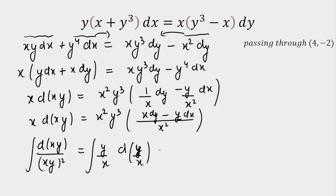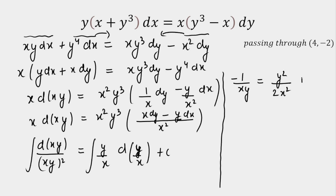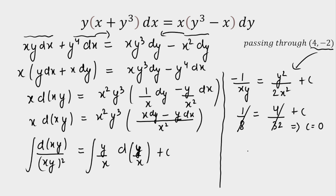Integrating on both sides (with constant of integration), we get −1/(xy) = y²/(2x²) + C. This curve passes through (4, −2), so substituting: −1/(4·(−2)) = (−2)²/(2·16) + C, giving 1/8 = 4/32 + C = 1/8 + C, so C = 0. With C = 0, the equation simplifies to y³ = −2x, or g(x) = (−2x)^(1/3) = cube root of −2x.